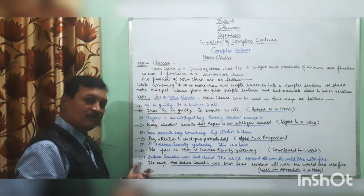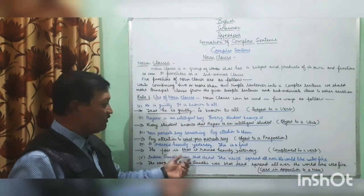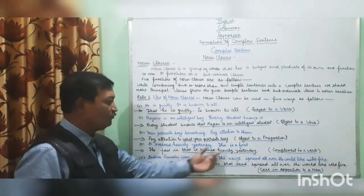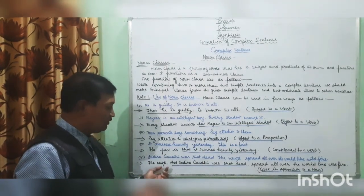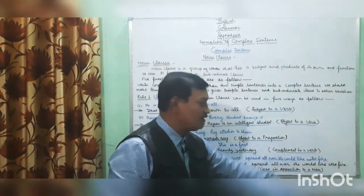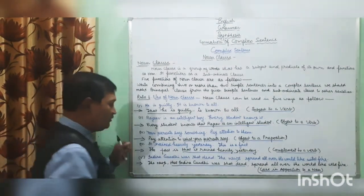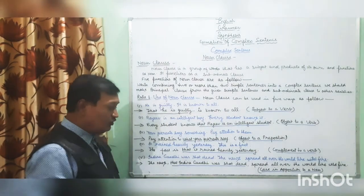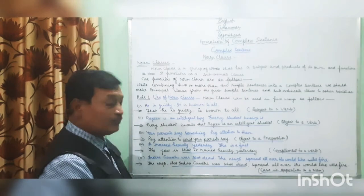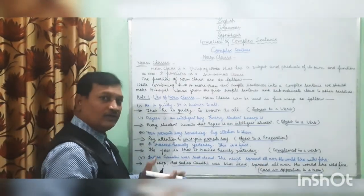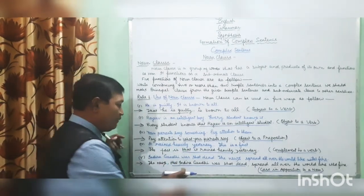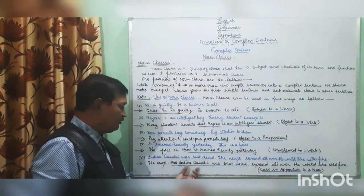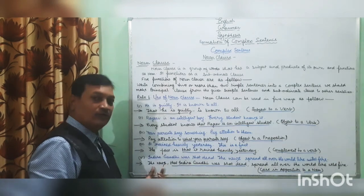Last example — fifth function: 'Indira Gandhi was dead. The news spread all over the world like wildfire.' Combined: 'The news that Indira Gandhi was dead spread all over the world like wildfire.' The underlined part is the noun clause and has been used as case in apposition to a noun. 'The news' is the noun and the noun clause is in addition to it as explanation.